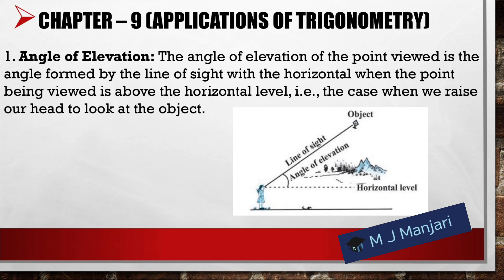Next we have Chapter number 9: Application of Trigonometry. The first topic is angle of elevation. The angle of elevation of the point viewed is the angle formed by the line of sight with the horizontal when the point being viewed is above the horizontal level — that is the case when we raise our head to look at the object. You can see it in the figure.